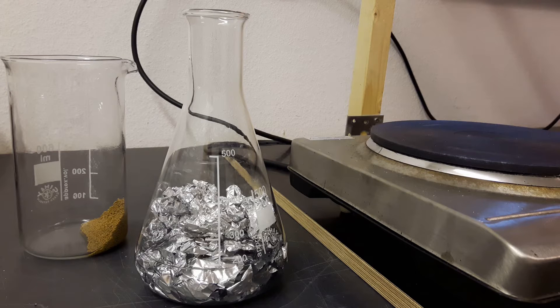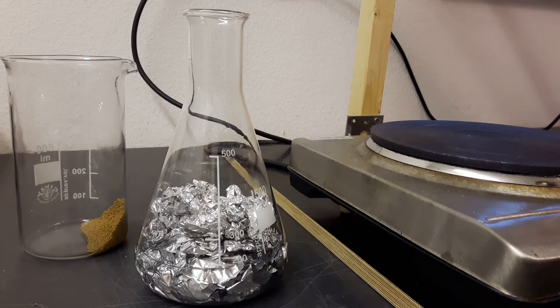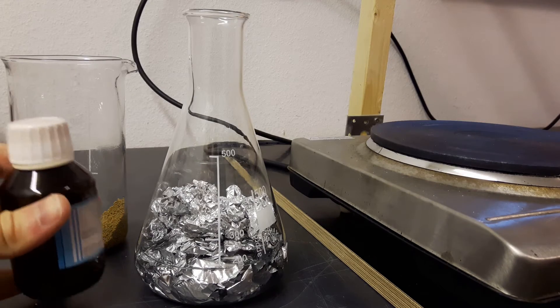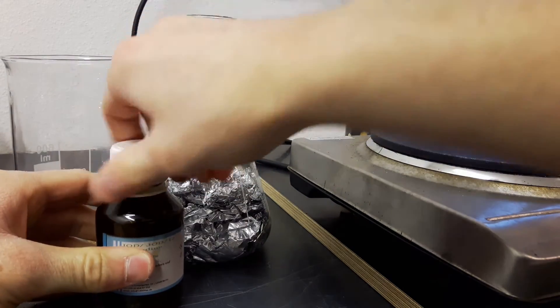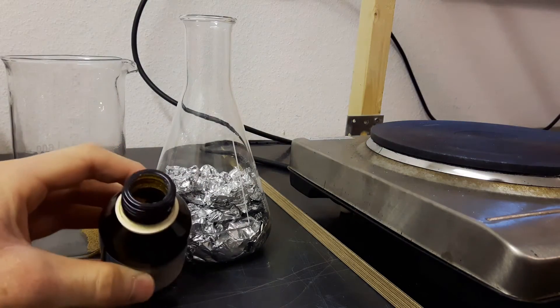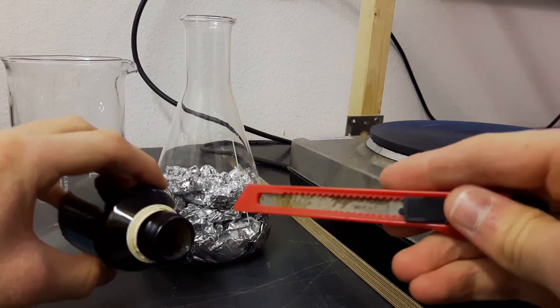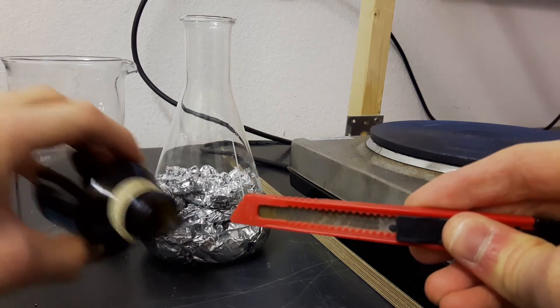And to start off basically you add all the aluminum foil in a flask then you add the isopropanol and finally the iodine. So I used quite a lot of iodine so I think about 5 grams are necessary for this amount of aluminum. And then everything is reacted under reflux.